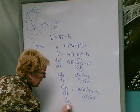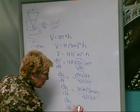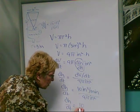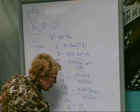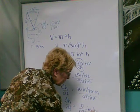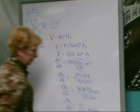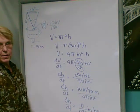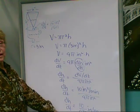Leaving us with an exact value of 10 over 9 pi, and units being inches per minute. And you can turn it into a decimal if you like. I'm going to leave it like that.